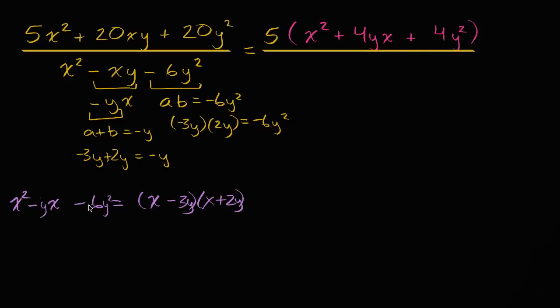And if it doesn't, I encourage you to play around with this, multiply these out a little bit, get a little bit more familiar with this. But now that we know that it can be factored like this, let's rewrite this. This is going to be x minus three y times x plus two y.